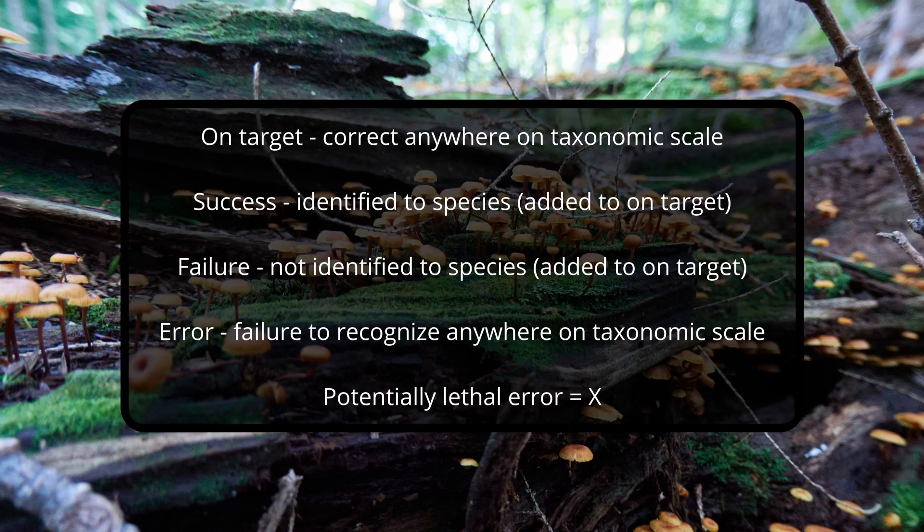Of the five-point scale, the first point is an on-target identification, meaning the application was able to correctly identify the organism anywhere along the taxonomic scale, even all the way down to species. A successful species identification means the species was identified, and this variable is counted on its own and with on-targets. A failure to identify to species is an on-target identification that was not refined down to species by the app. An error indicates when the application was wrong about the classification anywhere on the taxonomic scale. And a final point — what I consider to be a potentially lethal error — is relevant to foragers, and indicates if and when the application grossly misidentified an organism, mistaking something potentially deadly for something else entirely.